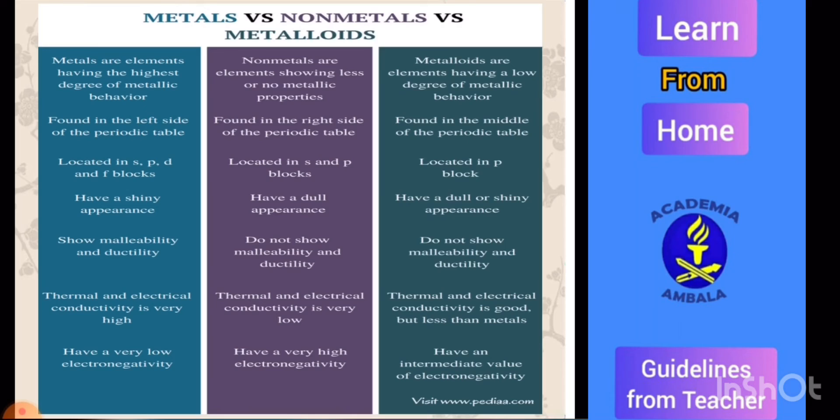In case of metals, they have bright luster and shiny appearance, but non-metals have dull appearance, and in metalloids they may be dull or shiny. Metals are malleable and ductile. Malleable means they have property to convert into sheets, whereas ductility is property to draw wires. Non-metals do not show malleability and ductility.